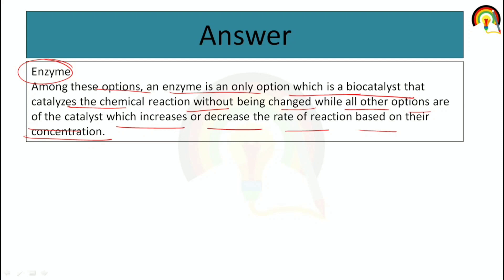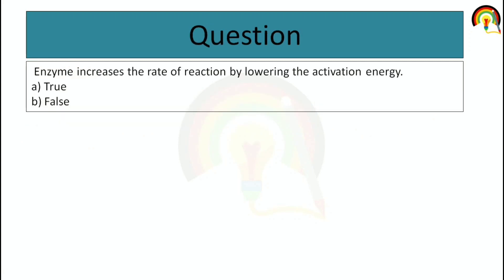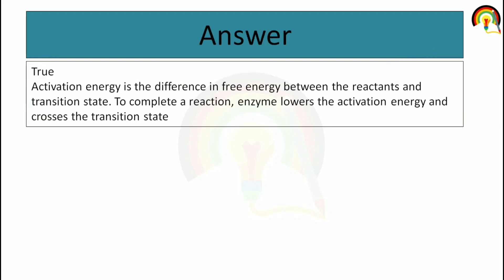The next question is: Enzymes increase the rate of reaction by lowering the activation energy — True or False? The correct answer is True. Activation energy is the difference in free energy between the reactants and the transition state. Enzymes lower the activation energy and help cross the transition state.